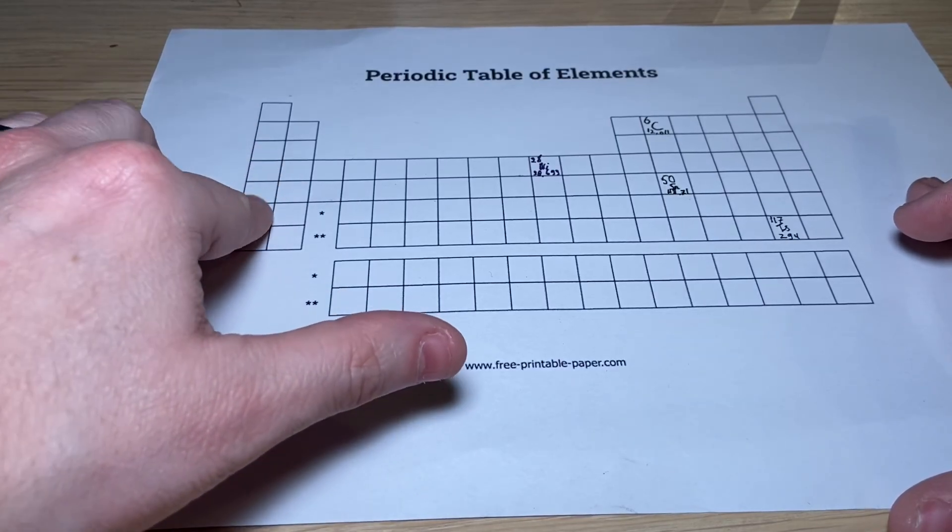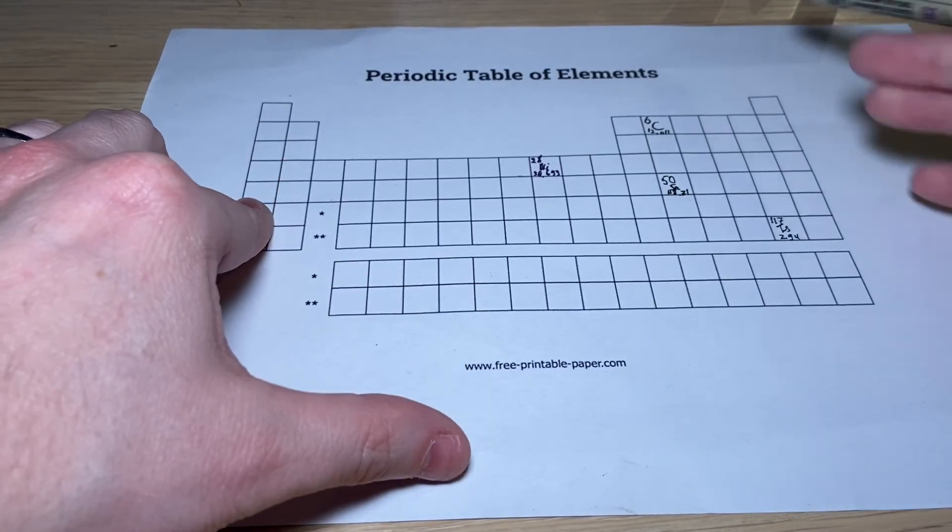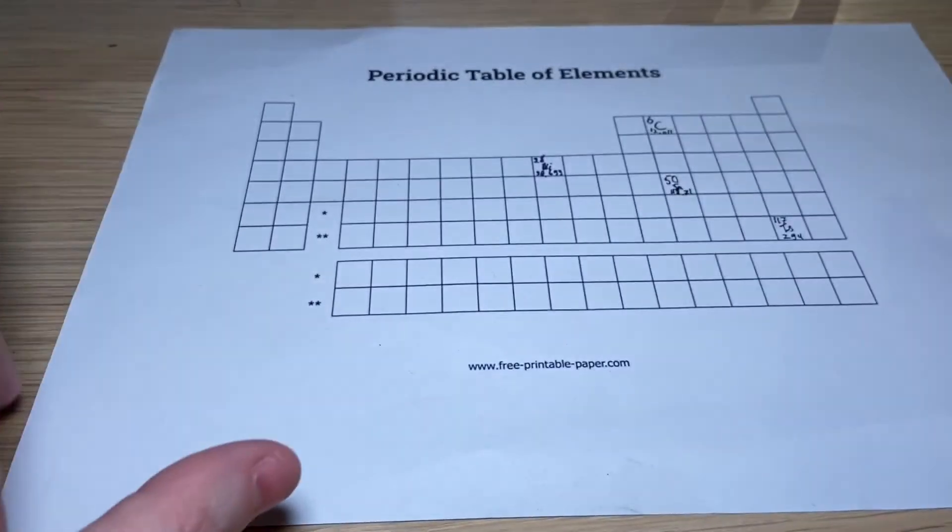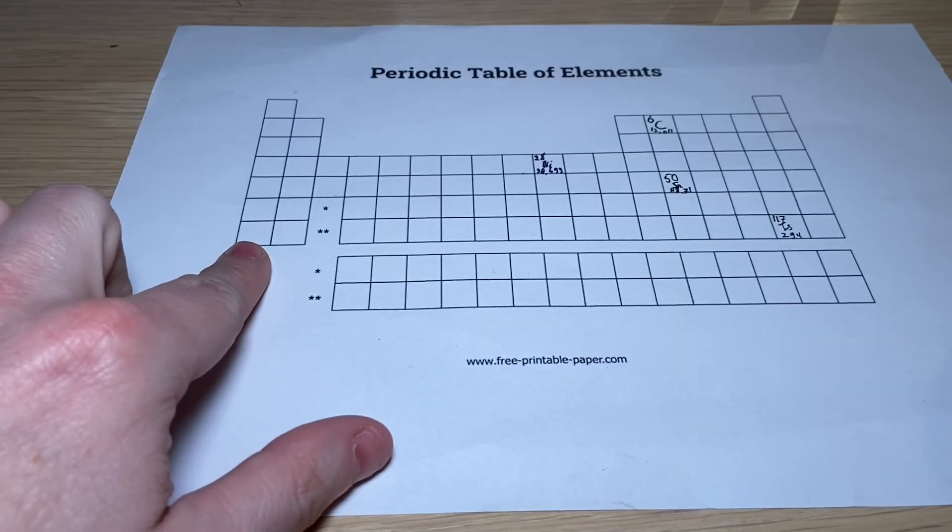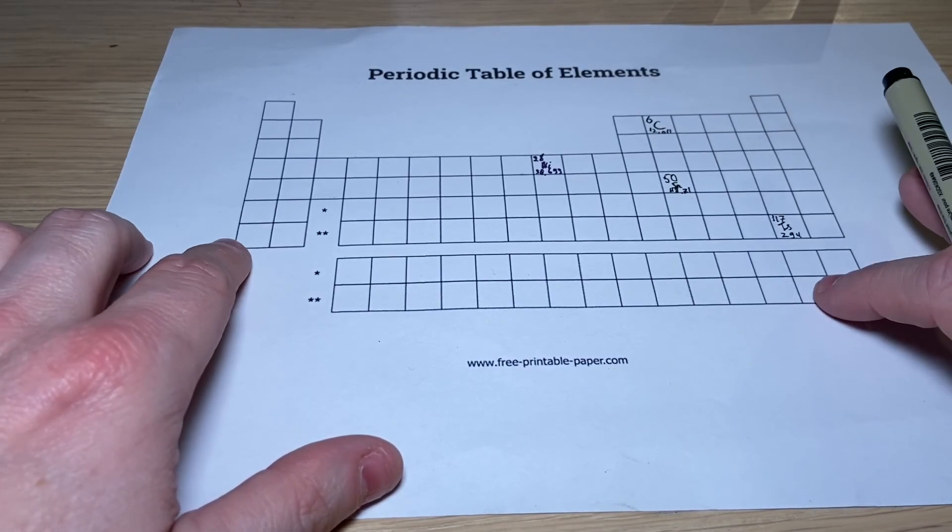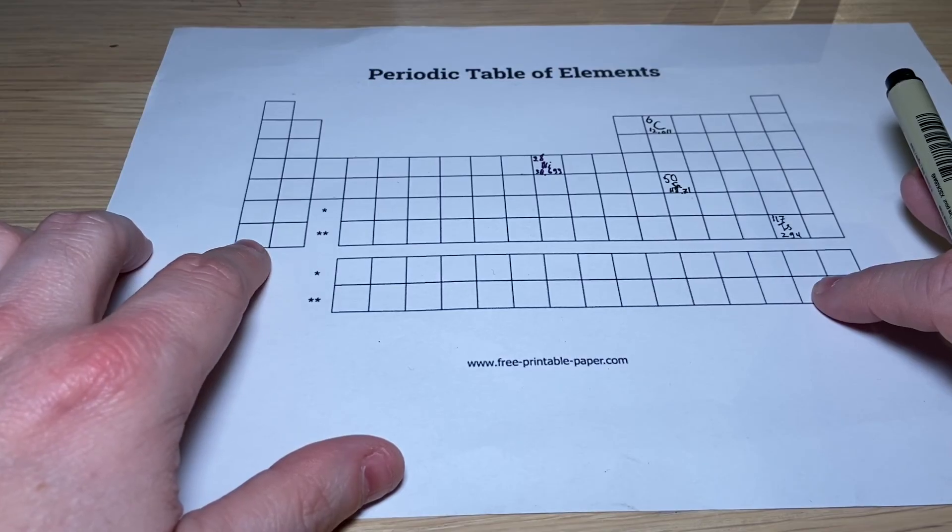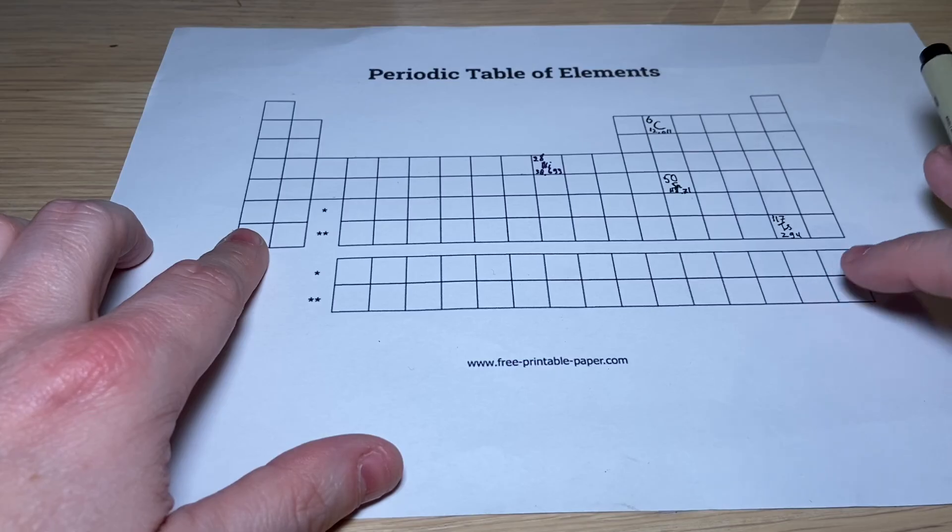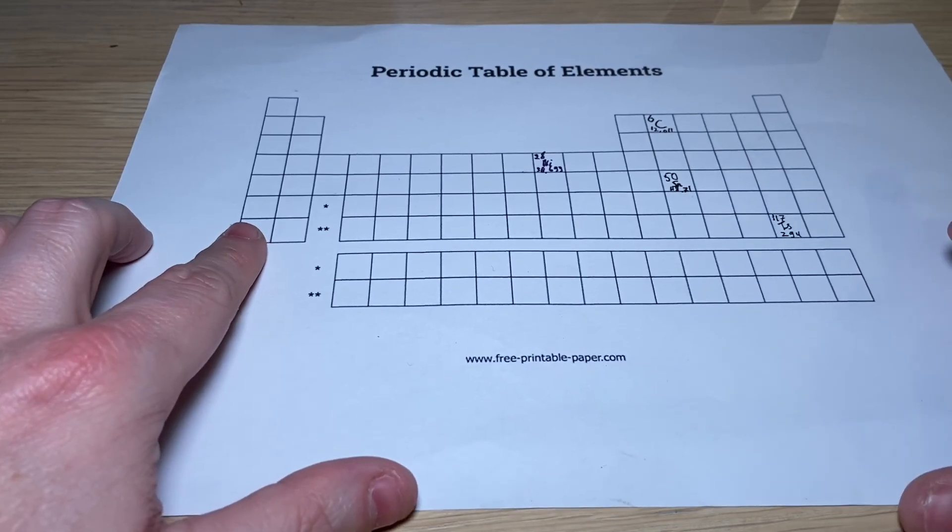Well, sodium is in the first group, and chlorine is in the seventh group. And this is why they like to combine together. Now, the other thing you have to realize is that in the first group and in the seventh group, those two elements are very reactive because these guys want to get rid of their electron, and these guys want to take that electron as soon as they can.